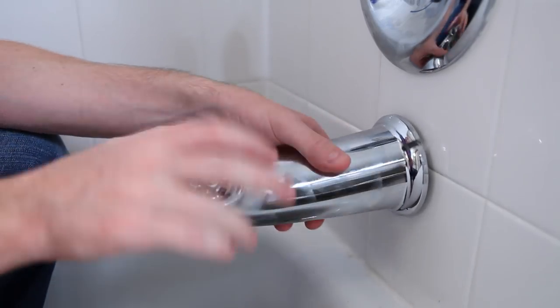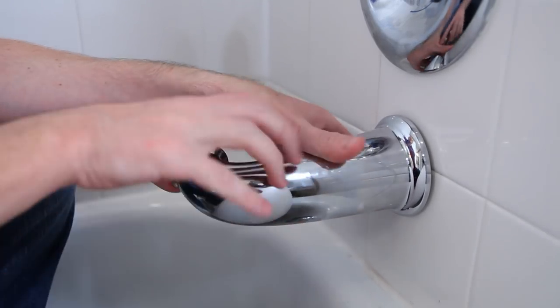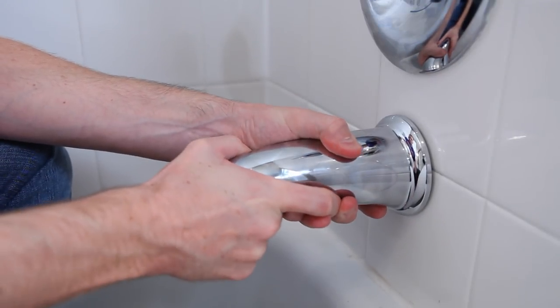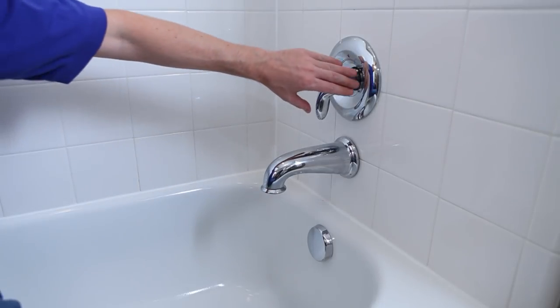And finally, tighten the new spout onto the extension nipple in a clockwise direction. And that's it. Test for leaks and you're good to go.